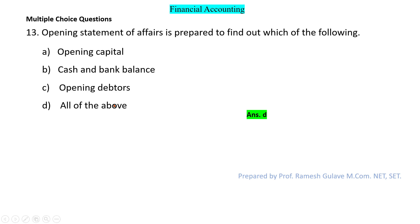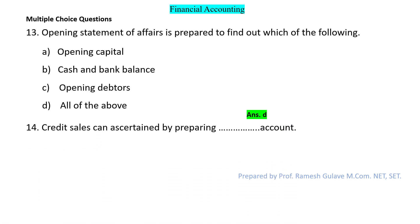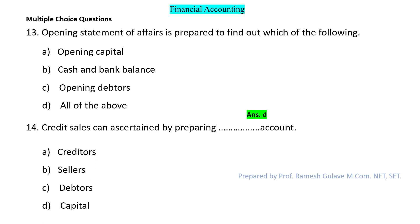The next question says: credit sales can be ascertained by preparing blank account. To find out the credit sales, we have to prepare the debtors account. So option C is the right answer.